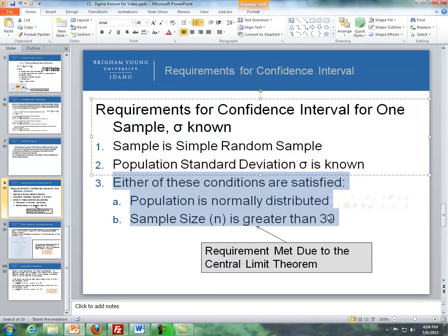We want to make sure that the distribution of our sample means is normally distributed. If our sample size is greater than 30, the requirement is met due to the central limit theorem.